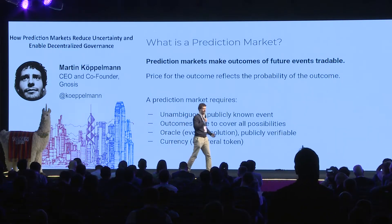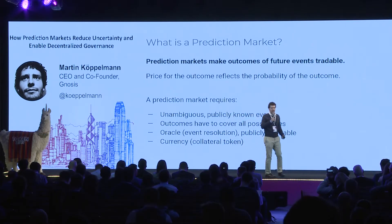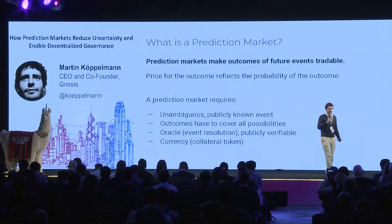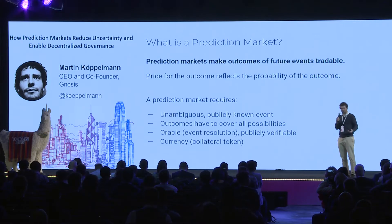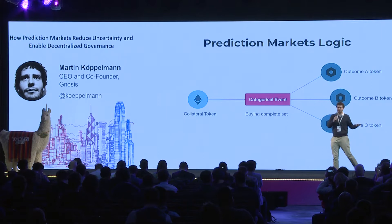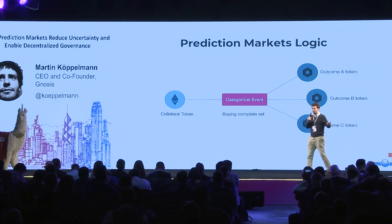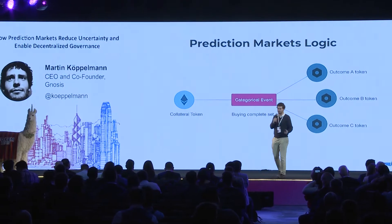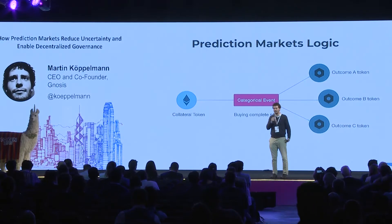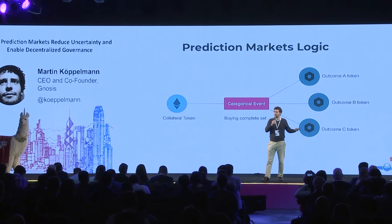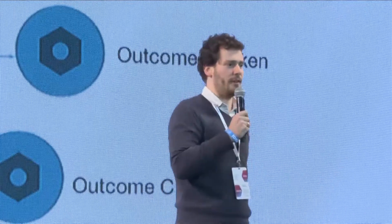You need to clearly specify the question you are asking, an oracle who determines the outcome, and a currency. As a simple example: you take a collateral token — say a US dollar — and define different outcomes. For instance, looking at transaction volume of Ethereum, you could define three outcomes: zero to one million, one million to ten million, or more than ten million transactions a day.